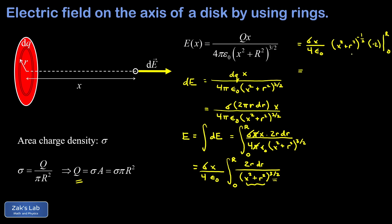We clean things up before evaluating. We cancel the factor of two, and end up with a minus sign out front: negative sigma·x over 2ε₀. We express the result with a square root instead of a fractional exponent: 1 over √(x² + r²). We evaluate this from zero to R, where little r was the integration variable.